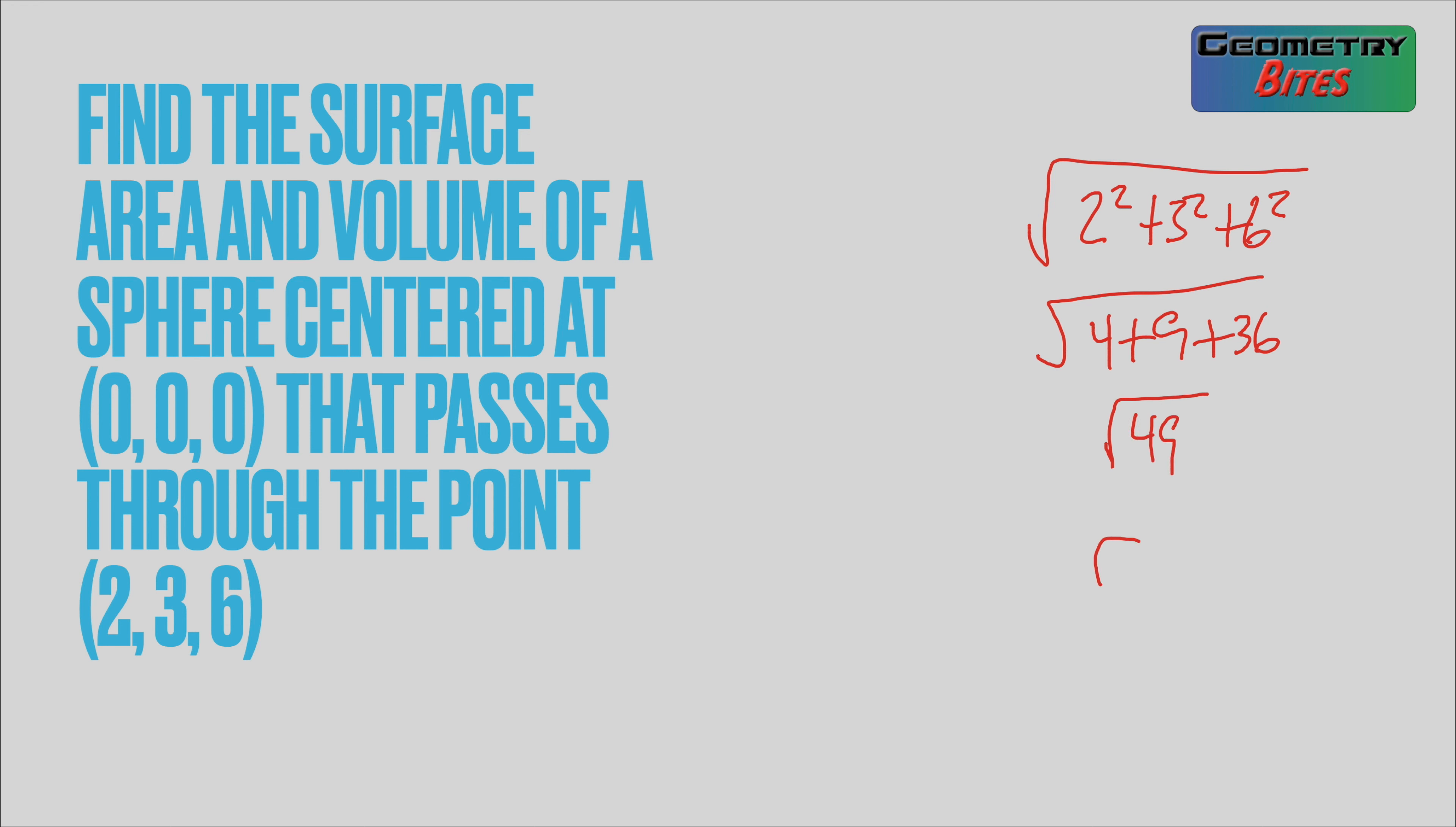That's 4 + 9, that's 13, plus 36, square root of 49. That means the radius is 7. Now that I know that, 4/3 π times 7³. 7 times 7 times 7 is 343. So that gets us 4/3 of 343π or 1372 over 3π.